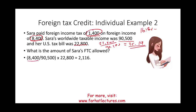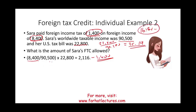Using the formula: foreign income of $8,400 divided by worldwide income of $90,500 equals 9.28%. Multiplying that by her US tax bill of $22,800 shows that if that income had been earned in the US, she would have paid $2,116. Since she only paid $1,400 in foreign taxes, which is less than $2,116, Sarah gets the full credit — she is able to recover her full $1,400.